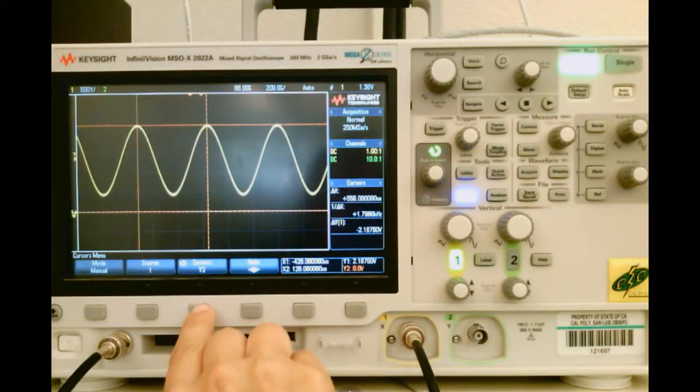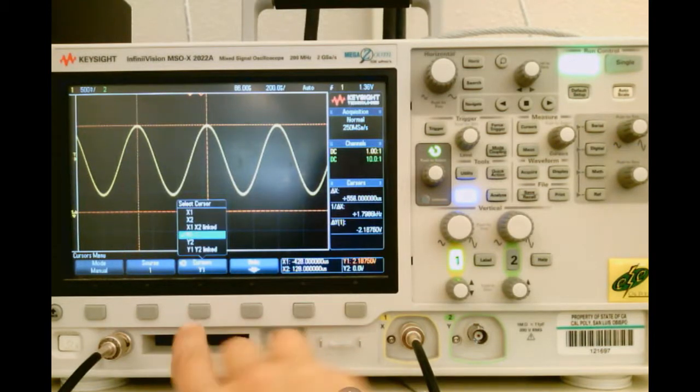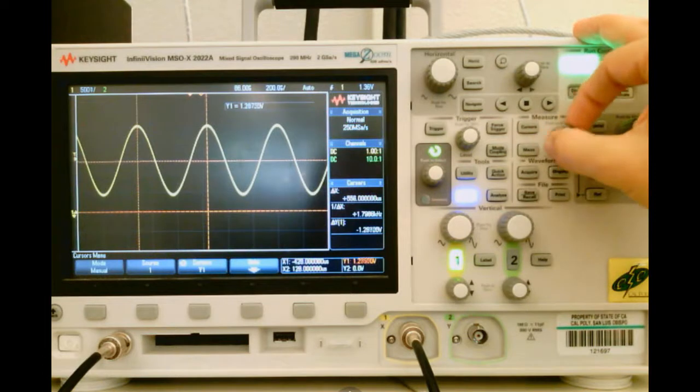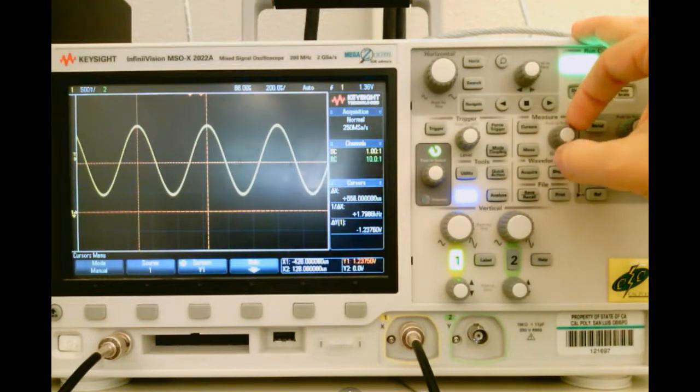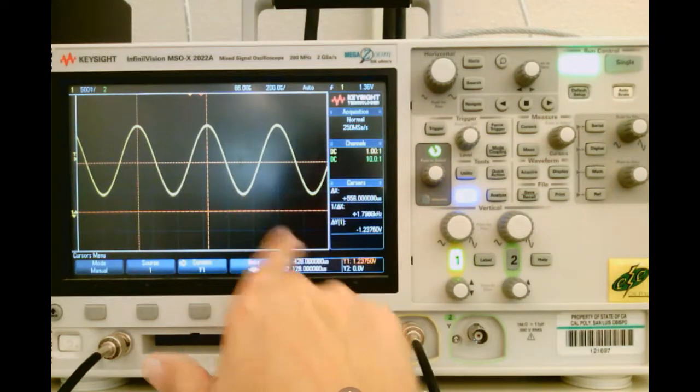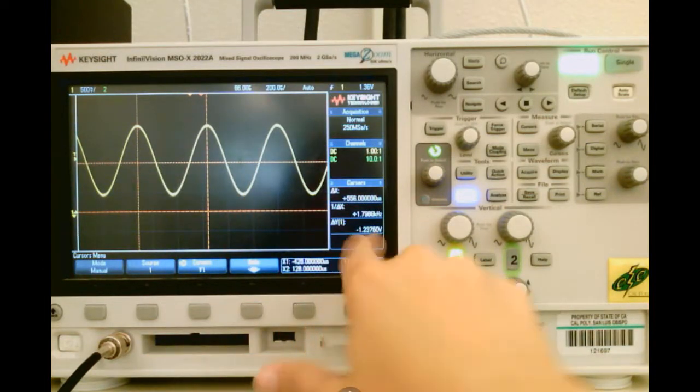And then I'll take Y1, and I'll move it to that spot that is the average value of the waveform, which I am kind of eyeballing, but looks to be right about there. And so my delta Y in this case, or my offset, is 1.2324 volts.